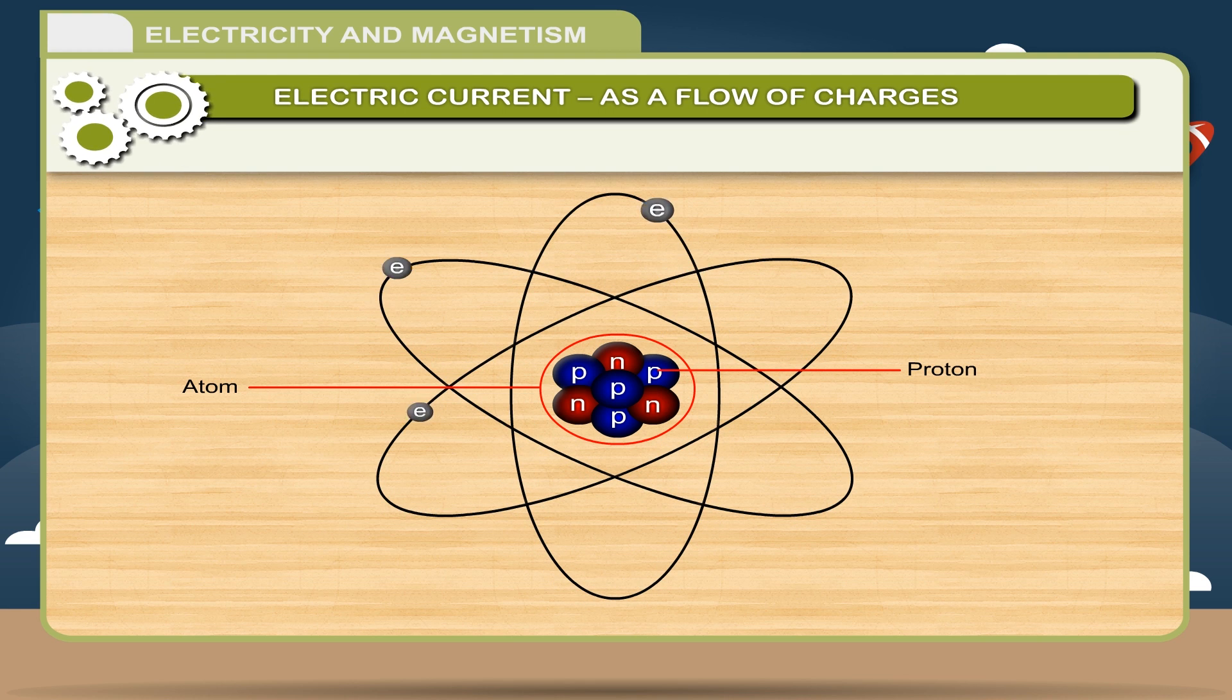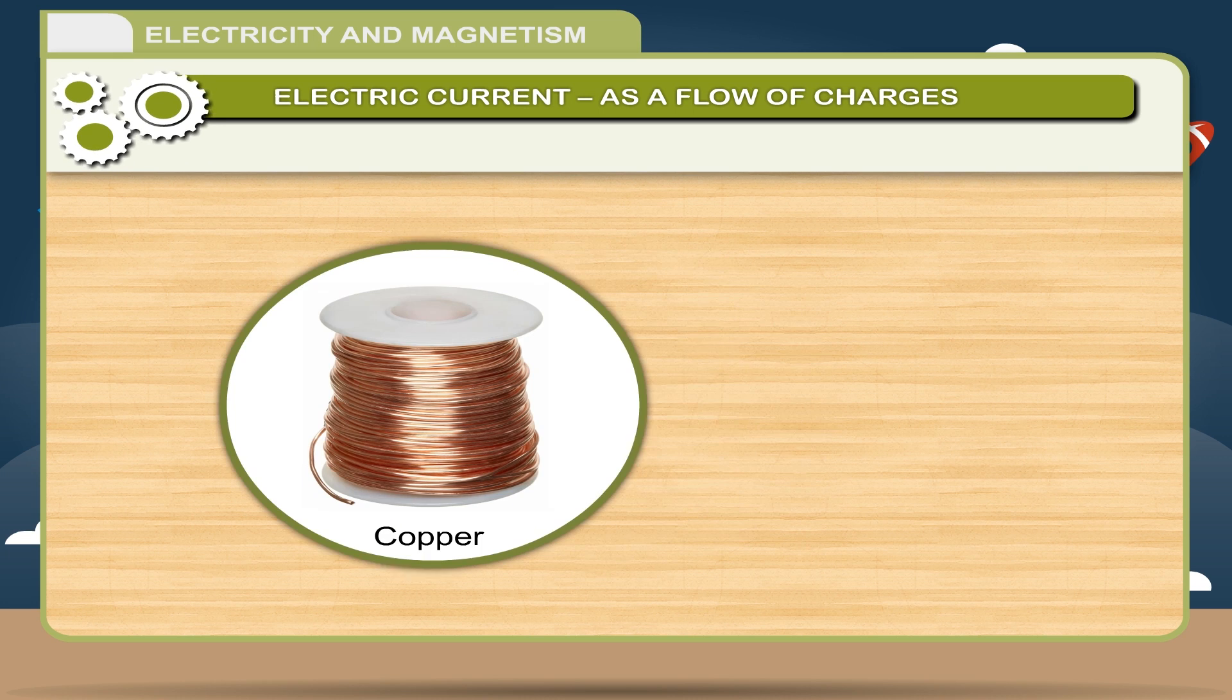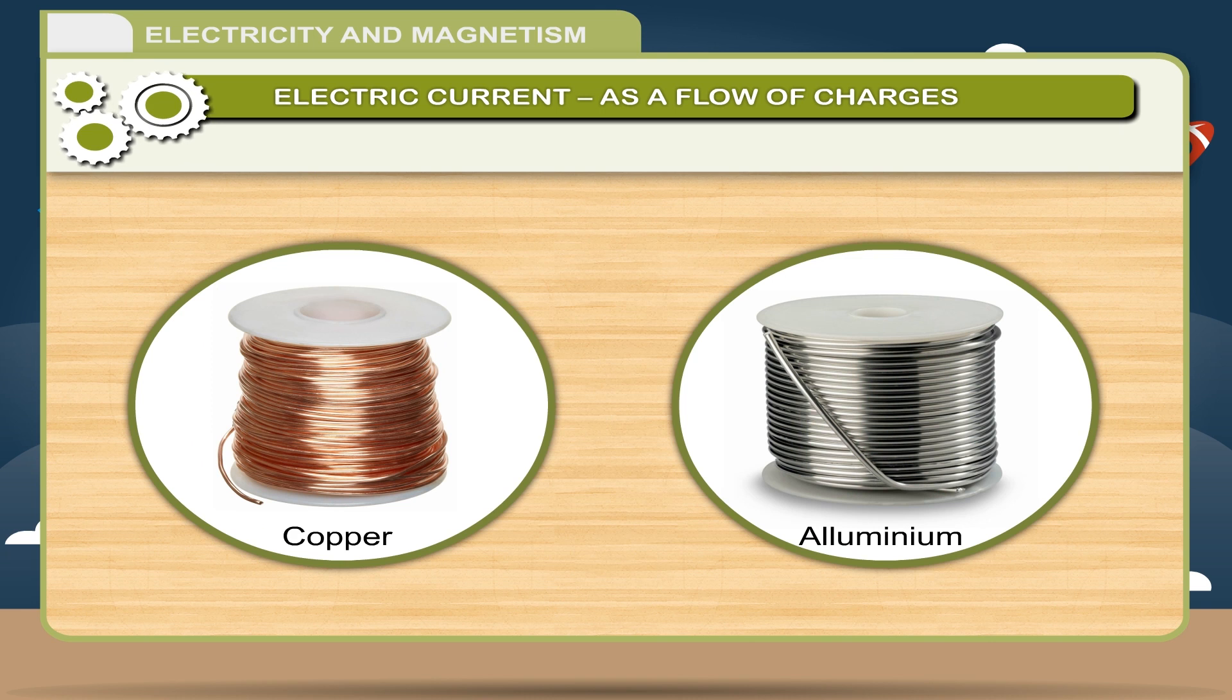Whereas the negative charges, i.e. electrons, are very light and remain in a constant random motion around the nucleus. The free electrons of a good conductor of electricity such as copper, aluminum, etc. start flowing in one direction when connected to a source of electricity.